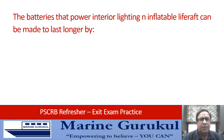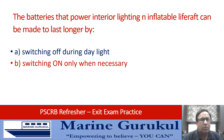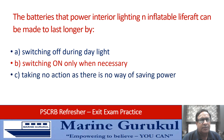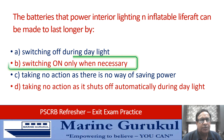Batteries that power interior lights in an inflatable life raft can be made to last longer by: A — switching off during daylight, B — switching on only when necessary, C — taking no action as there is no way of saving power, or D — taking no action as it shuts off automatically during daylight hours. Answer is B — switching on only when necessary.